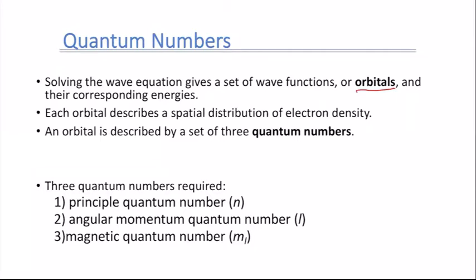Each orbital is described by a set of quantum numbers — specifically three different quantum numbers. You can think of the quantum numbers as like the address for the electron. Each electron will have its own unique set of quantum numbers, just like you have your own unique address for your house or apartment.